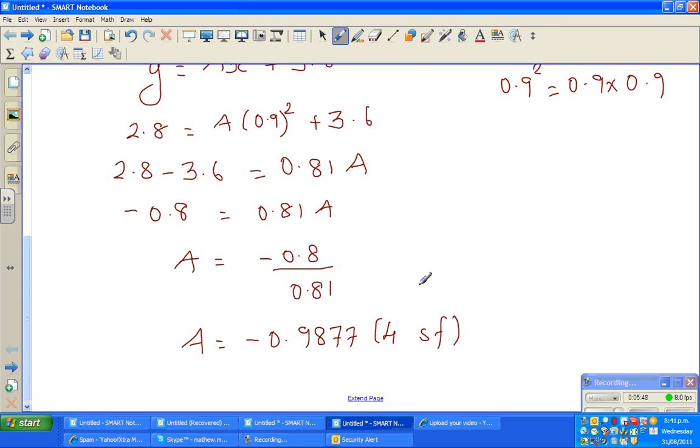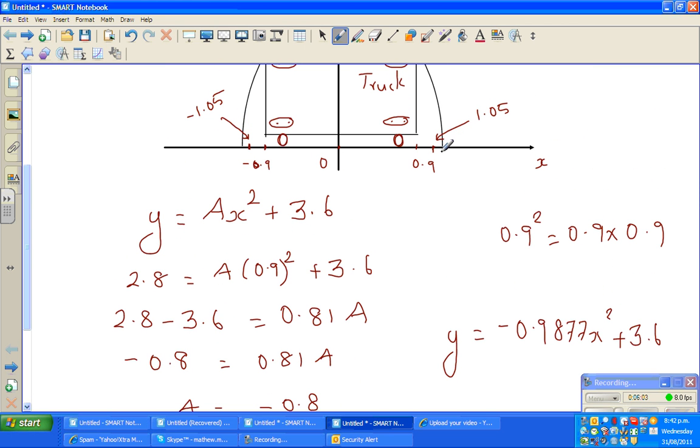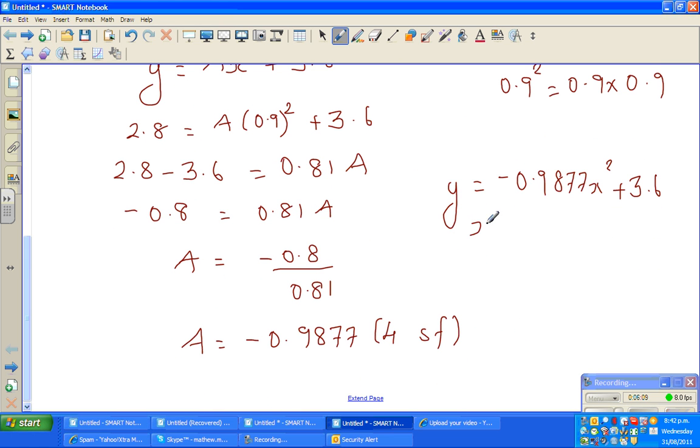So now the equation becomes y equals negative 0.9877x squared plus 3.6. Now my question is very simple. If x is 1.05, how much is y? That will give me the height. So the question is when x is 1.05, what is y? So that's pretty simple. This is y equals negative 0.9877 times 1.05 squared plus 3.6. For this I'll need a calculator.